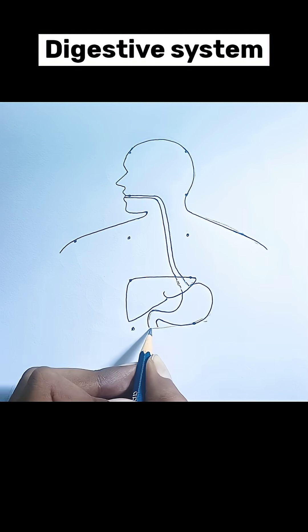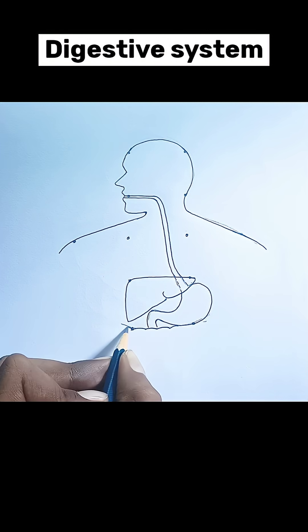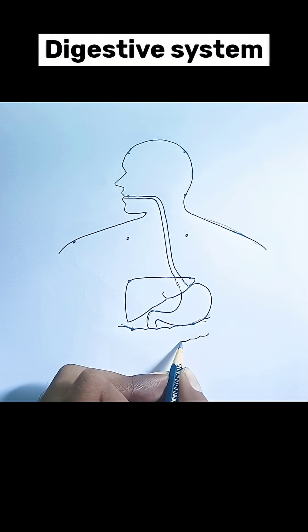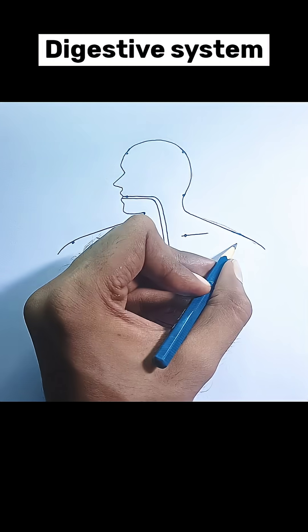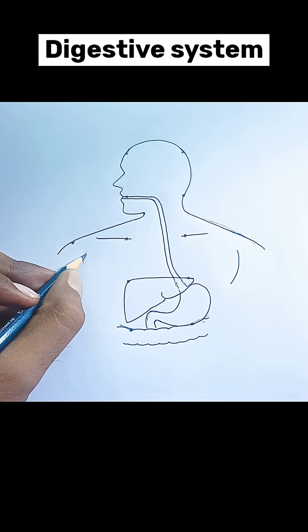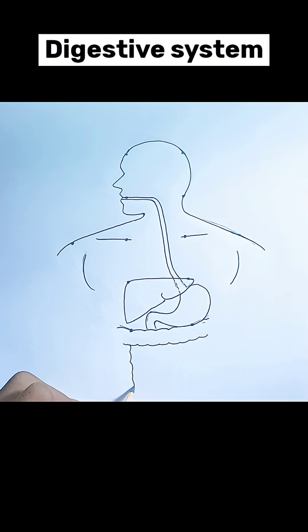Small intestine: a long, coiled tube where most chemical digestion and nutrient absorption occur. It's divided into three parts: the duodenum, jejunum, and ileum. Though not individually labeled, this entire structure is the small intestine.